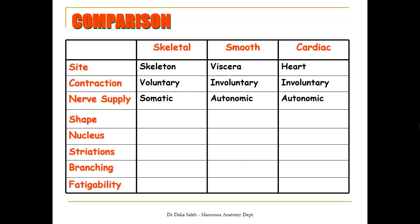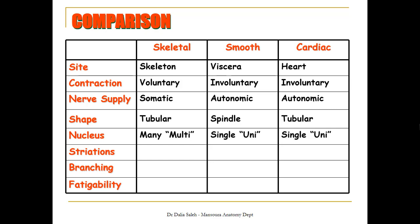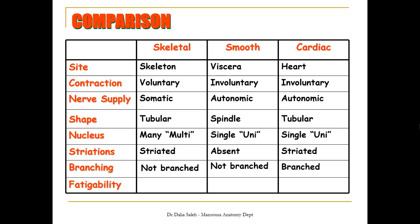For shape, skeletal muscle fibers are tubular or cylindrical, smooth muscle is spindle or fusiform, and cardiac muscle is again tubular or cylindrical. For number of nuclei, skeletal muscle is multi-nucleated, while smooth and cardiac are uni-nucleated. Skeletal and cardiac muscles are striated, while smooth muscle has no striations. For branching, skeletal and smooth muscles do not branch, while cardiac muscle fibers are branched. For fatigability, skeletal muscle easily gets fatigued, smooth muscle does not easily fatigue, and cardiac muscle fibers have no fatigability.